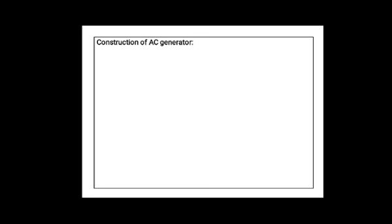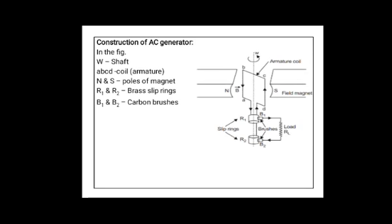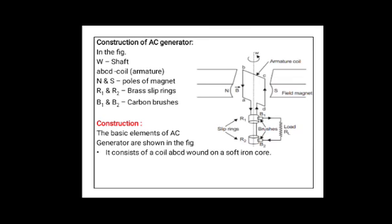Now let us look at the construction of the AC generator. This is a block diagram of the AC generator. In the figure, W is the shaft. A, B, C, D is the coil. N and S are the poles of a magnet. R1 and R2 are brass slip rings. B1 and B2 are carbon brushes. The basic elements of the AC generator are as shown in the figure.